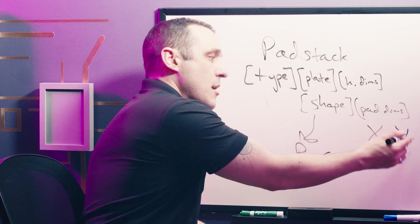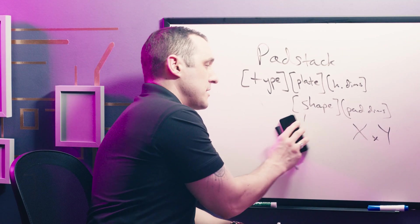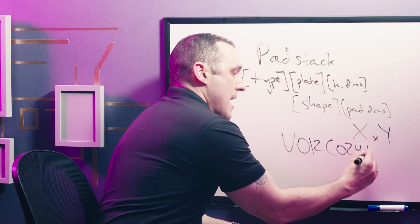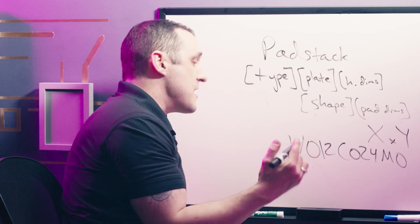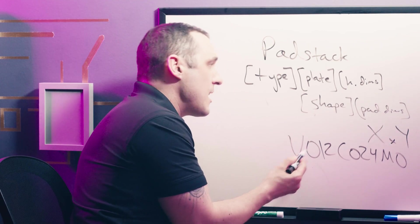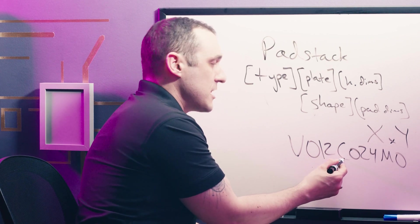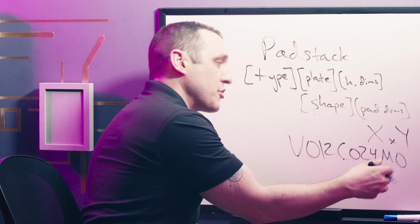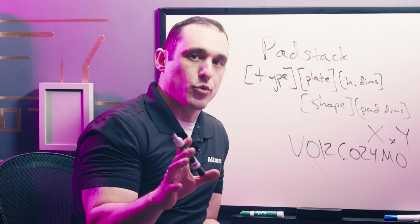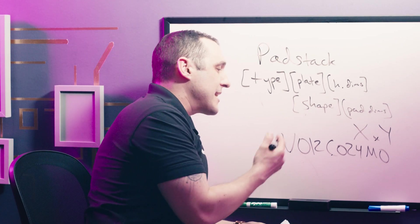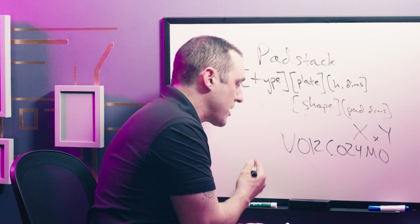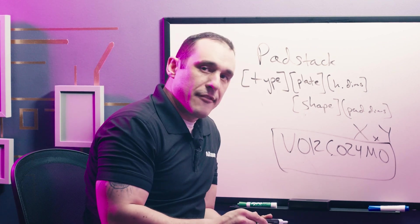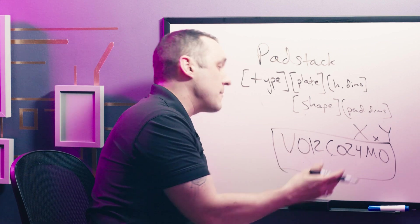If it's square you just have the same numbers for X and Y. As an example, consider the pad stack name V012C024M0 — something you might find inside Altium Designer. This name tells you it's a via type, with a 12 mil hole, the pad is circular with a 24 mil diameter, and M0 states that the solder mask has 0 mil expansion, meaning it follows whatever the default solder mask expansion rule is in your PCB layout. When you open the pad and via templates panel, you'll see entries that look just like this, and other CAD platforms use a similar naming scheme.